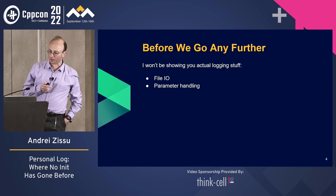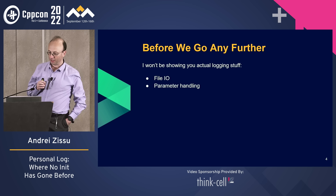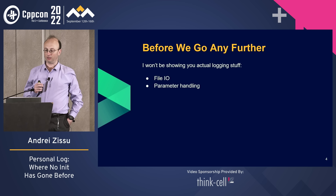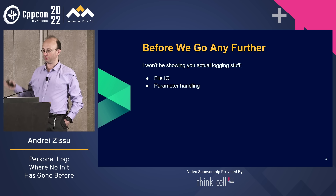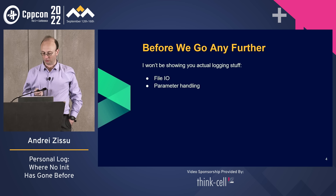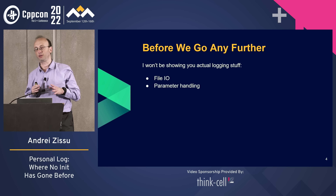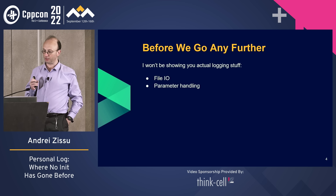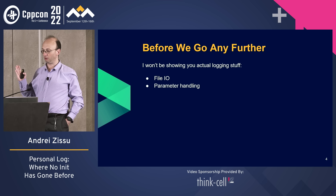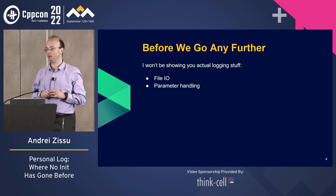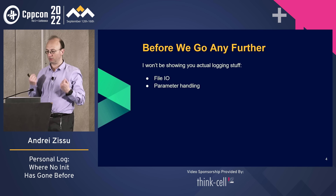So first, a short disclaimer. This is a talk about logging, but it's not quite a talk about logging. I'm not interested in which actual logger you use, how you do your file I/O, or anything else. For simplicity, I will be showing only logs that display simple strings. I won't be dealing with log parameters, which are obviously part of actual production code. I'm dealing with a very simple log payload and a novel way of obfuscating it and later decoding it back.